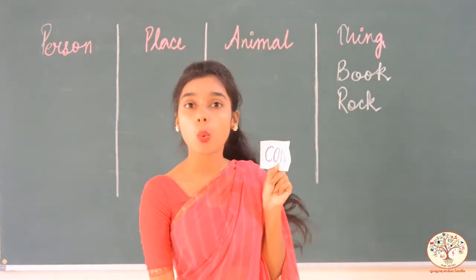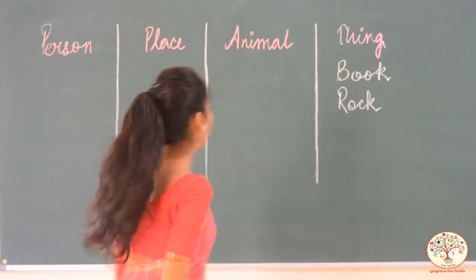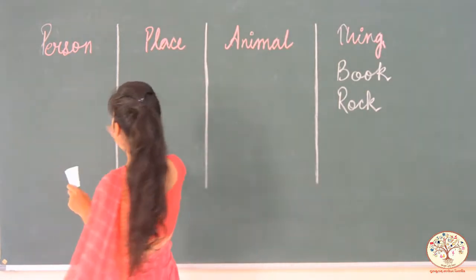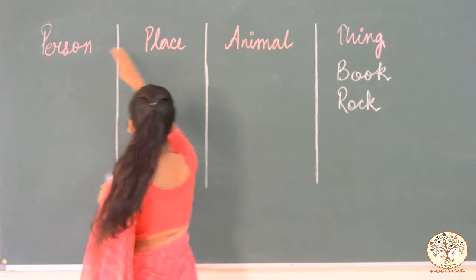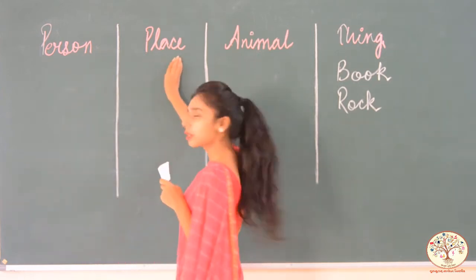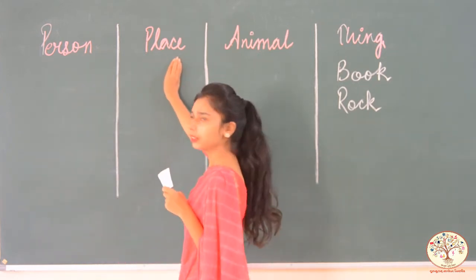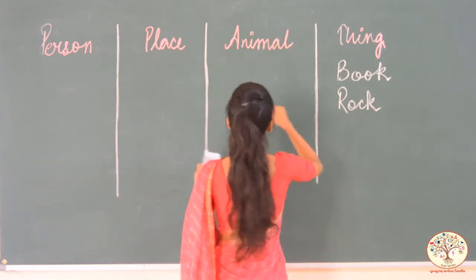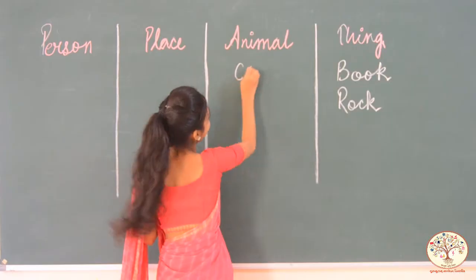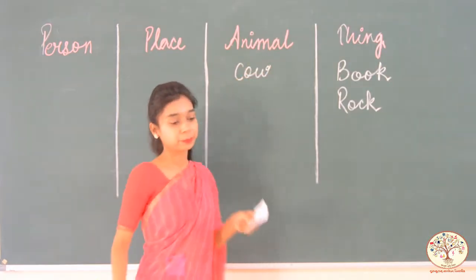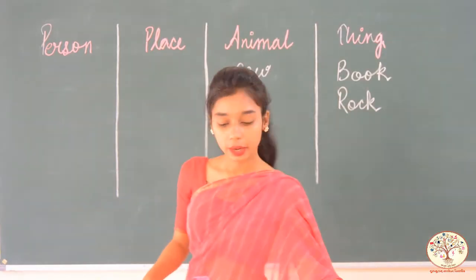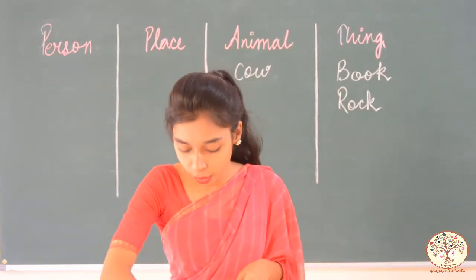What I have next? Cow. Cow is the name of a person? No. Is it the name of a place? No. It is an animal. Very good!